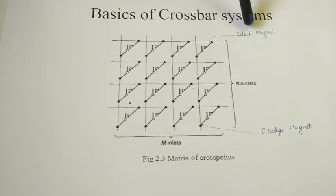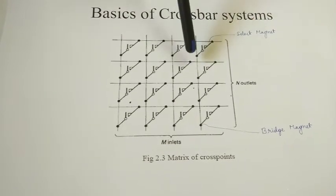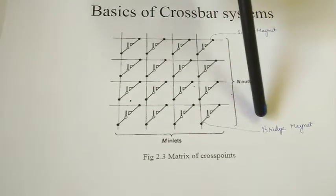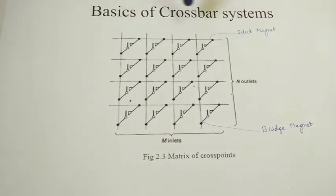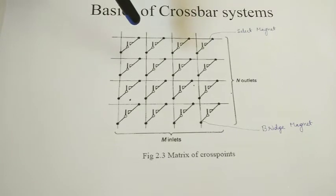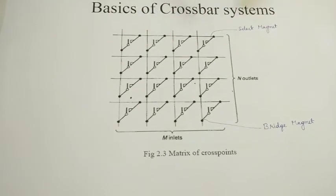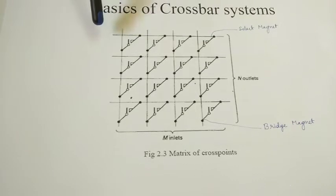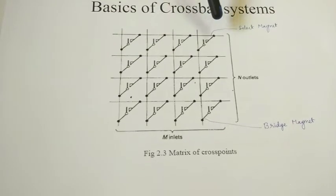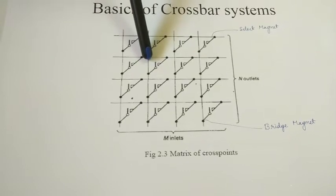One magnet operates on the vertical side and another magnet operates on the horizontal side. The horizontal magnet is named the select magnet. The vertical magnet is called the bridge magnet. The system works on magnetism. Whenever any person wants to communicate with another person, this cross point has to be connected.